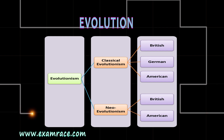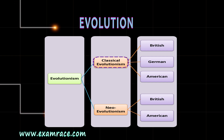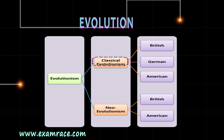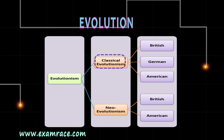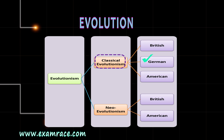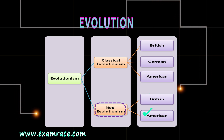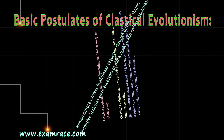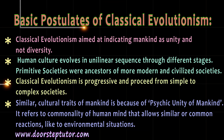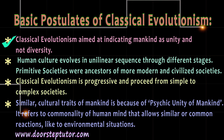It can be classified as classical evolutionism and neo-evolutionism. Classical evolutionism has three schools of thought: the British, the German, and the American school of thought, while neo-evolutionism has two schools of thought, namely the British and the American school of thought.